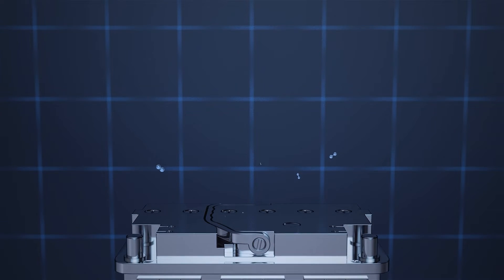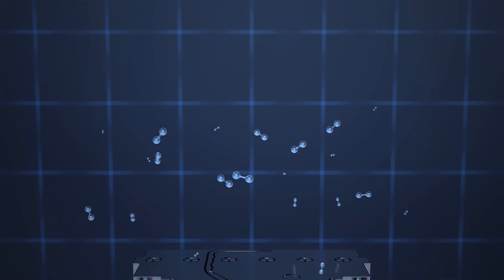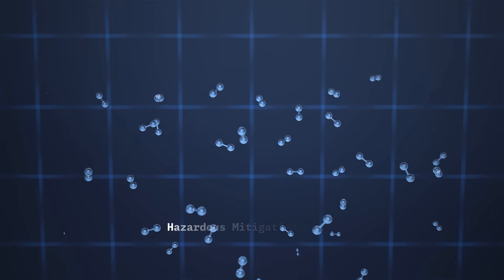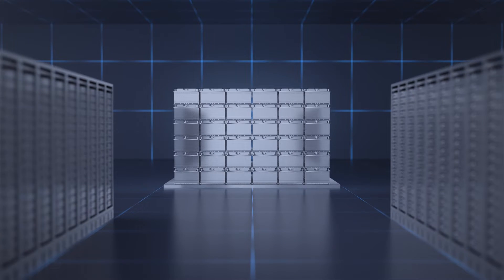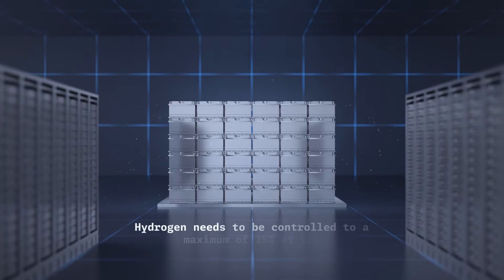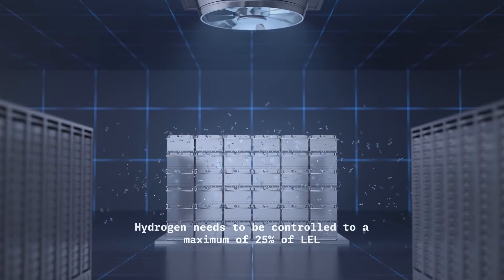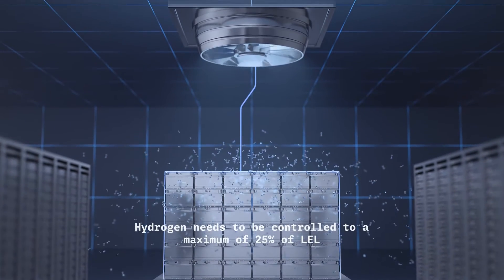To manage this hydrogen venting, battery room operators develop comprehensive hazardous mitigation plans to control hydrogen to a maximum concentration of 25% of the lower explosion limit, abbreviated as LEL.